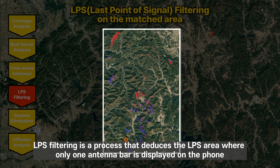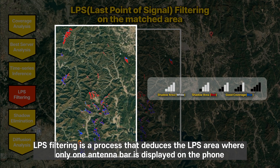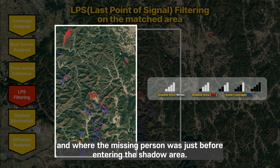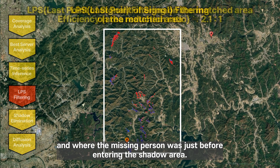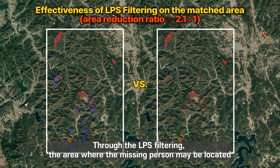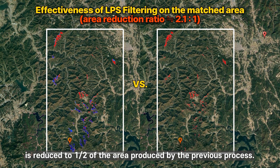LPS filtering is a process that deduces the LPS area — an area where only one antenna bar is displayed on the phone — and where the missing person was located just before entering the shadow area. Through LPS filtering, the area where the missing person may be located is reduced to one-half of the area produced by the previous process.